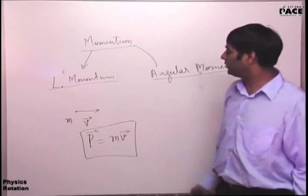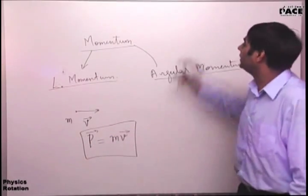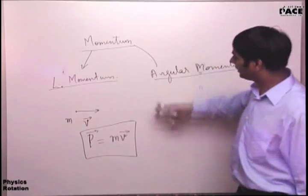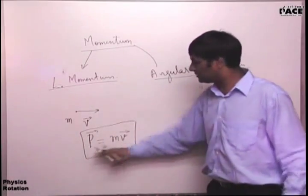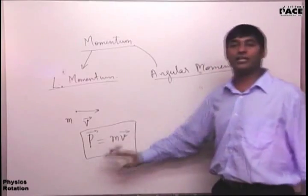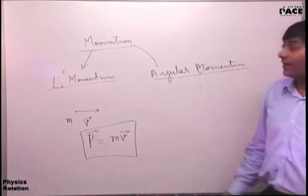Momentum of a point mass is given by p = mv. This is the most simple thing. And if there is any collision, we'll come to that too. Before coming to the collision, we'll cover this. This is the linear momentum.